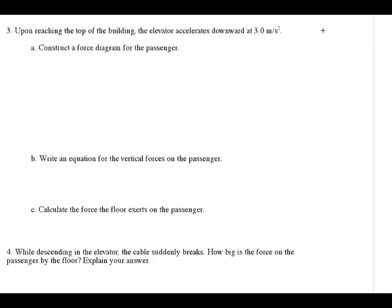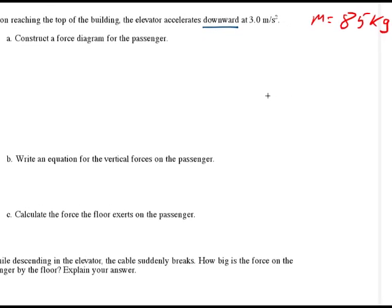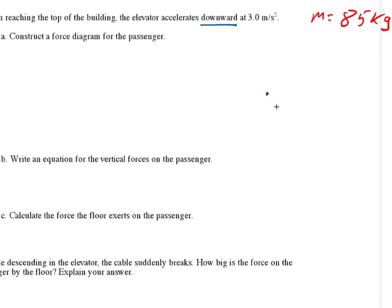Let's work one more example of our elevator math. This is the same passenger, so the mass is 85 kilograms. We've reached the top of the building and come to a stop. If we come to a stop, we have a downward acceleration — or a negative acceleration. Let's construct a force diagram. This arrow is force gravity from the earth on the passenger.